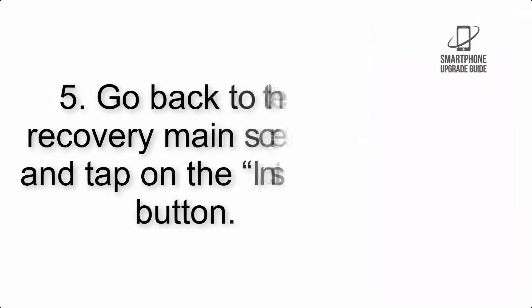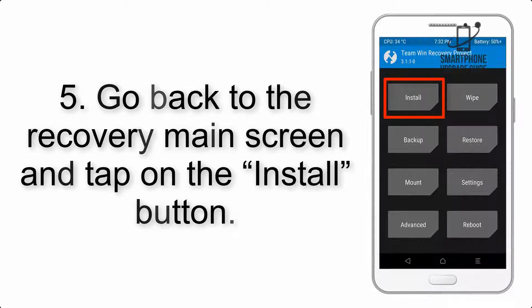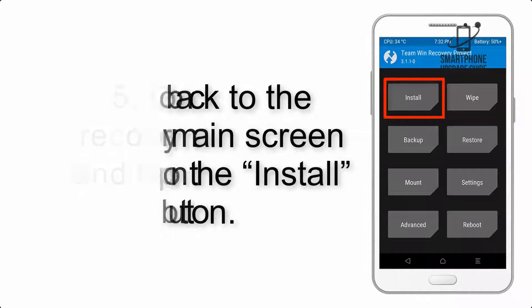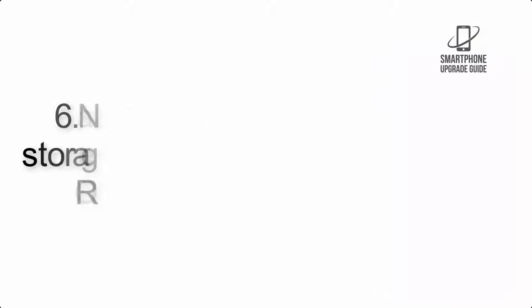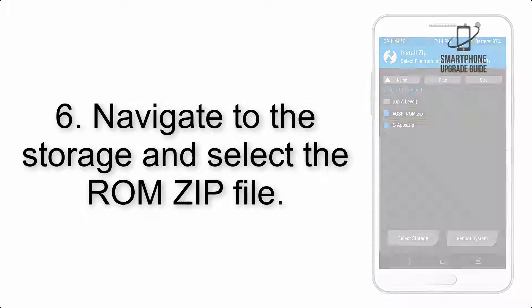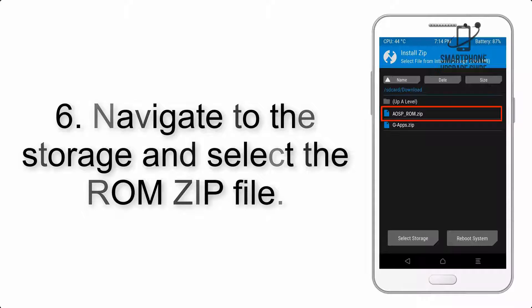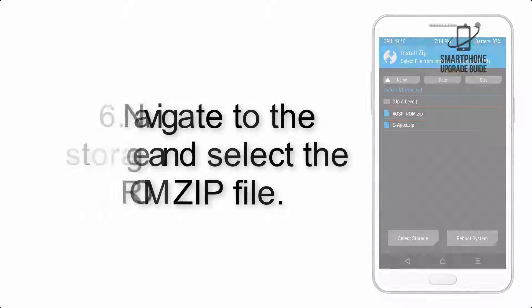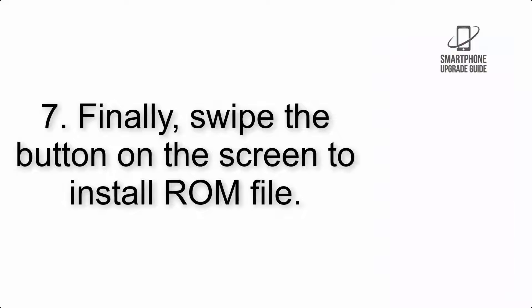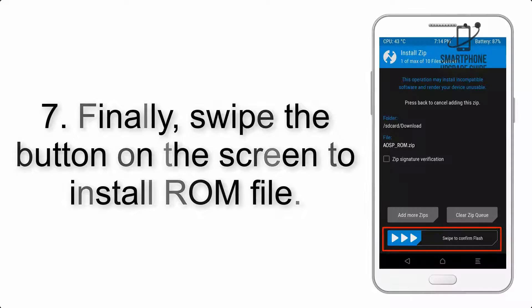Step 4: Swipe the button to wipe the device. Step 5: Go back to the recovery main screen and tap on the Install button. Step 6: Navigate to the storage and select the ROM zip file.